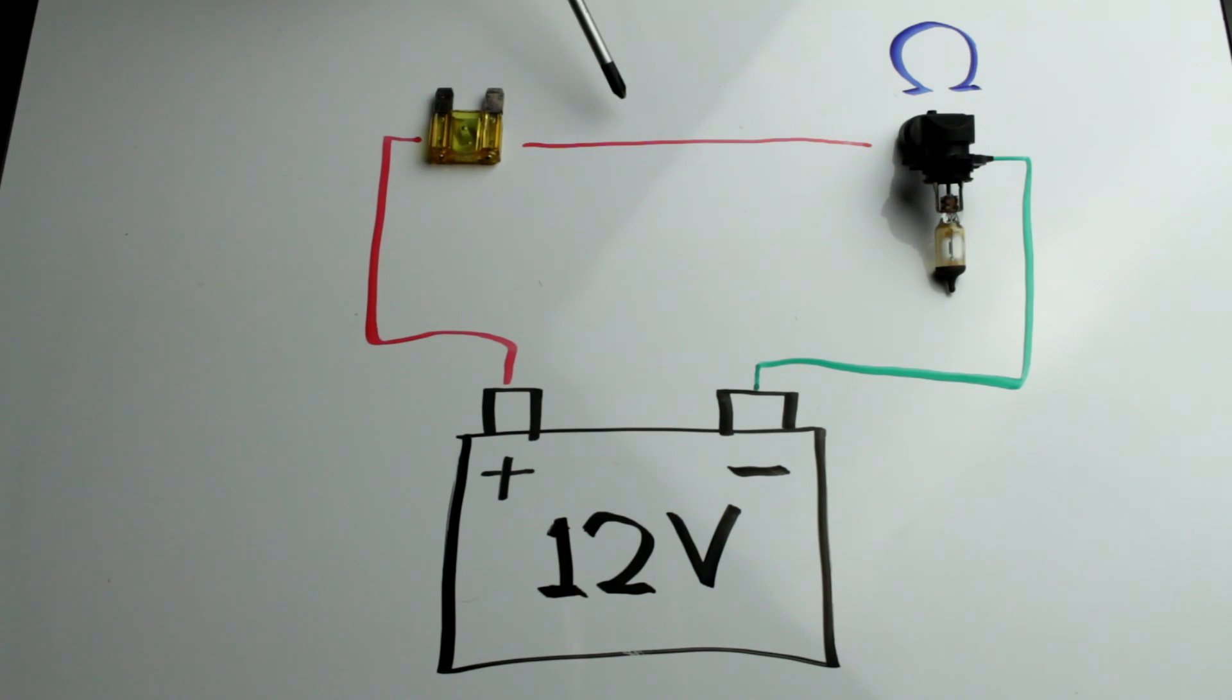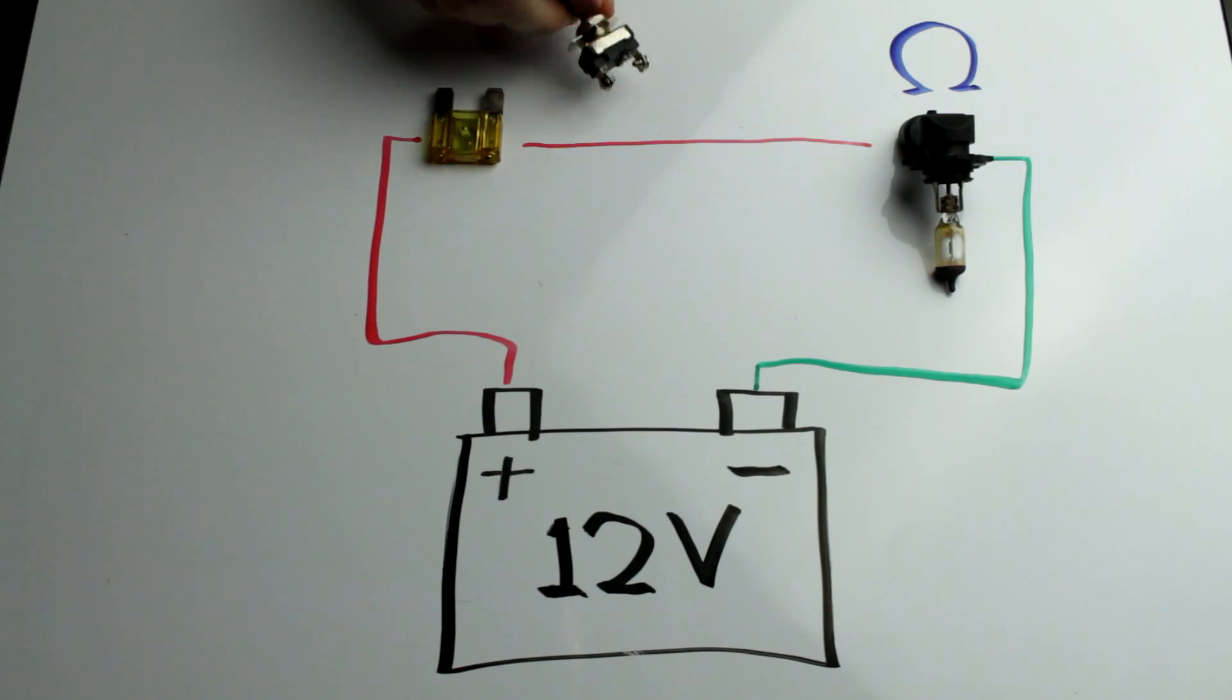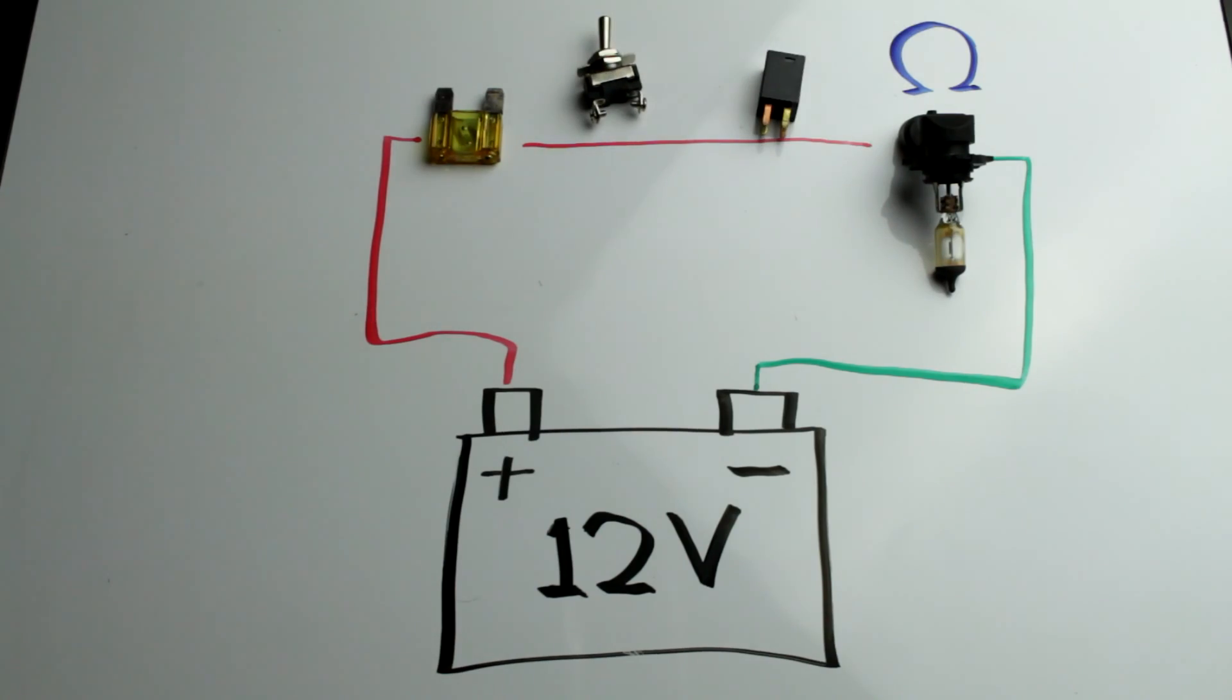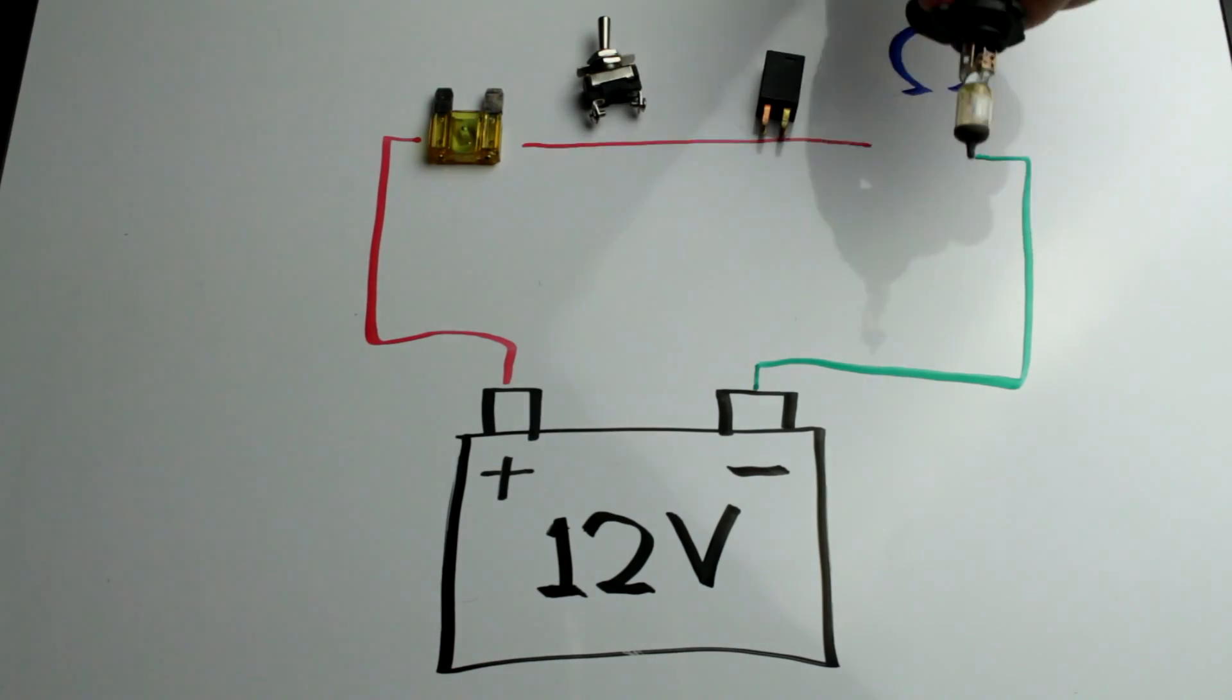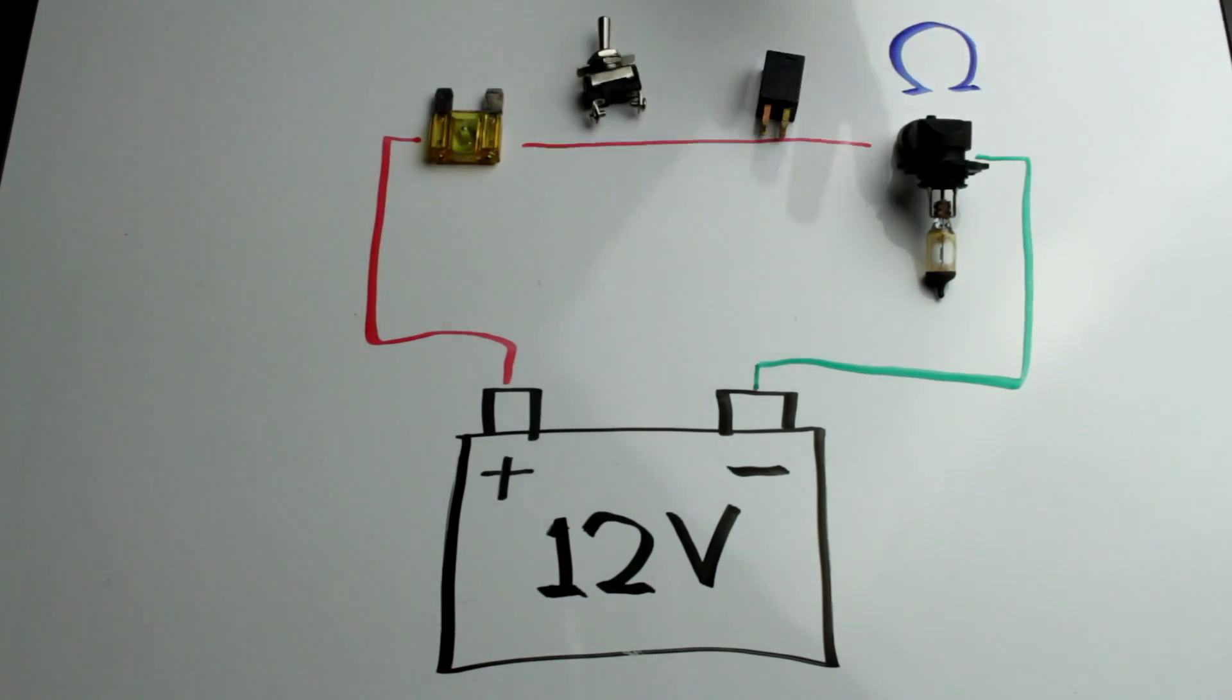With this 20 amp fuse selected, they probably picked a wire that can flow 21 or 22 amps. Same goes for the switch or relay that they selected for that circuit, and same with the socket that this bulb plugs into. If you want to change this part out and make the circuit a different amperage, you're going to have to upgrade everything along the path.